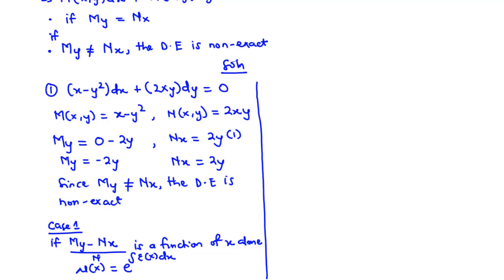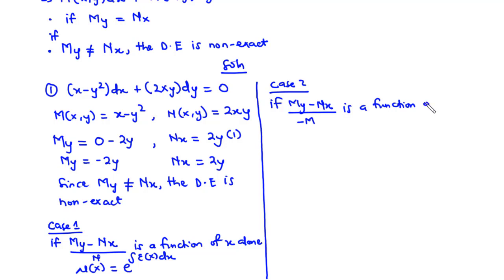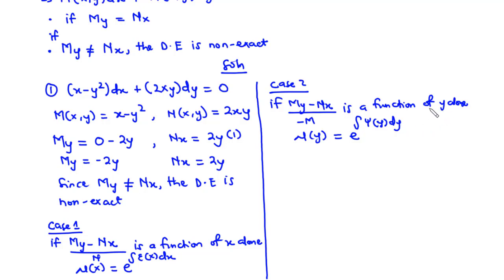Case 2: if (My − Nx) / (−M) is a function of y alone, then the integrating factor μ(y) = e^(∫ξ(y)dy). You first test Case 1; if it doesn't yield a function of x alone, you move to Case 2, which most often gives a function of y alone.